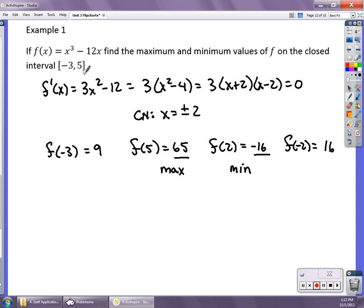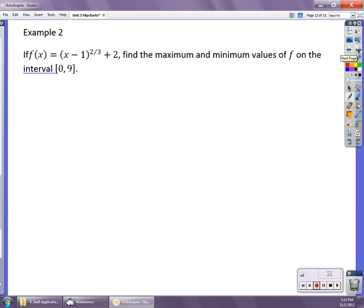Let's look at one that has the derivative as a little bit more complex. This one is f(x) = (x - 1)^(2/3) + 2. And we're going to find the maxes and mins on the interval from 0 to 9. So find the derivative, f'(x). When I found the derivative, I got 2 over 3 times (x - 1) to the 1/3 power.